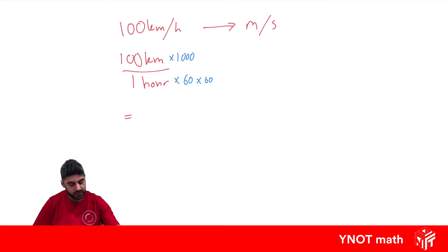Doing this, well 100 times 1000 is going to be 100,000 metres. One times 60 times 60 is going to be 3600 seconds. And we can see we've now got it in the units that we want. We wanted metres per second and that's exactly what we've got.